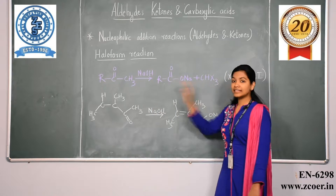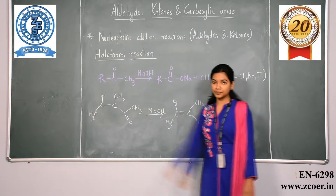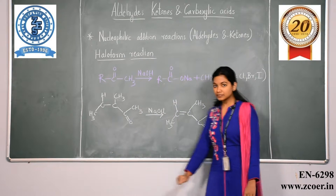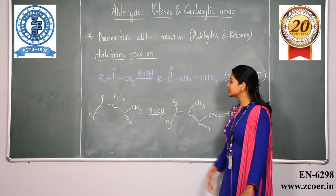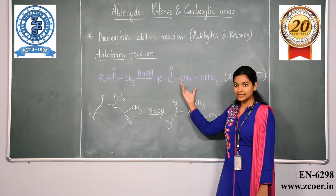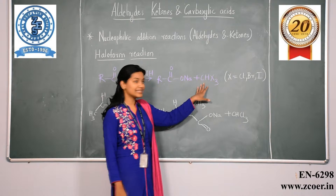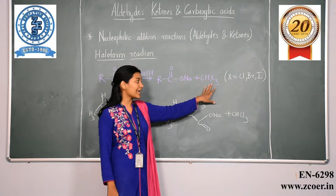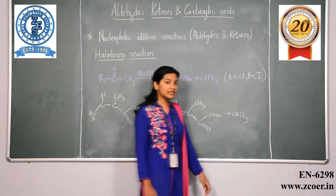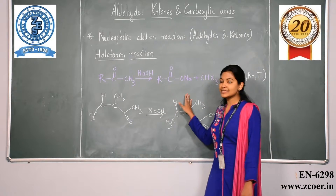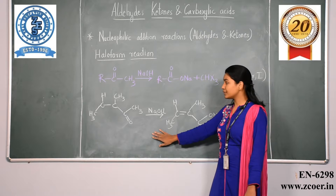The haloform reaction involves a methyl ketone reacting with sodium hypohalite. It reacts to give a salt of carboxylic acid along with a trihalomethane (CHX3), where X represents the halogen — chloride, bromide, or iodide. The carbonyl product formed has one carbon less than the original carbonyl compound.